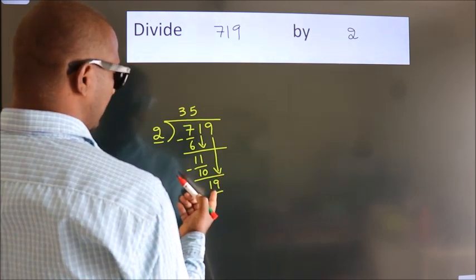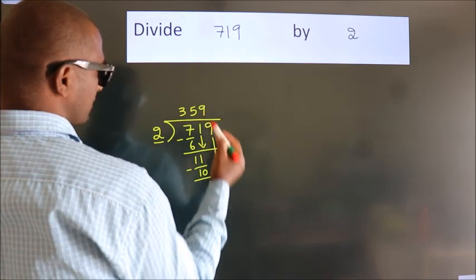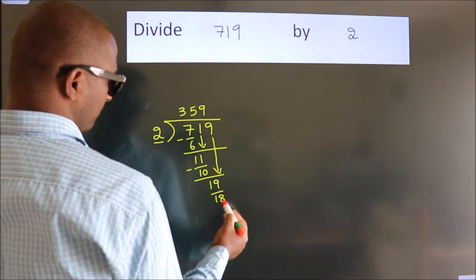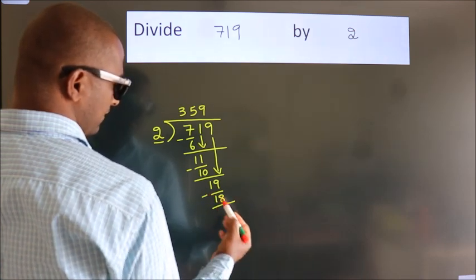A number close to 19 in the 2 table is 2 times 9, 18. Now we subtract and get 1.